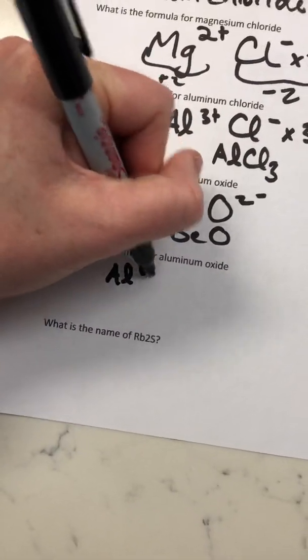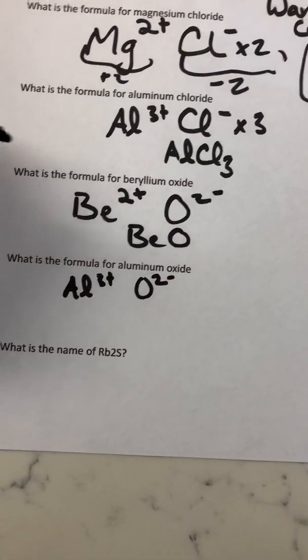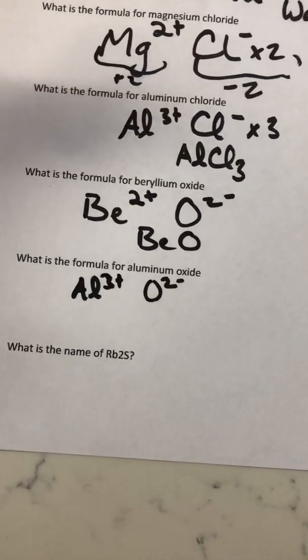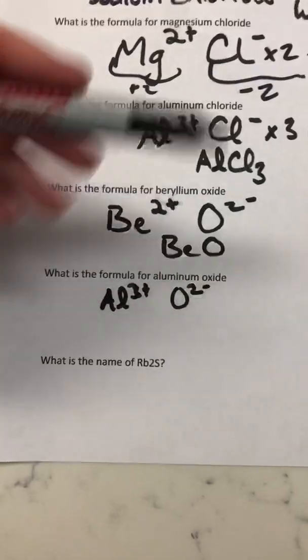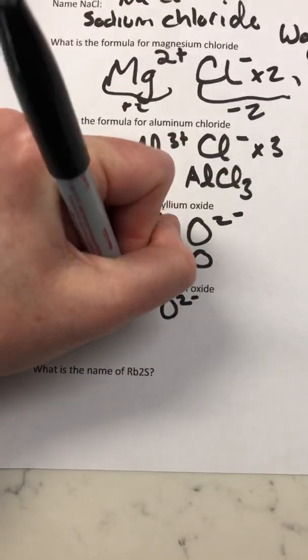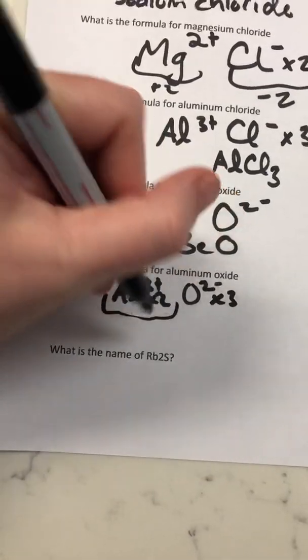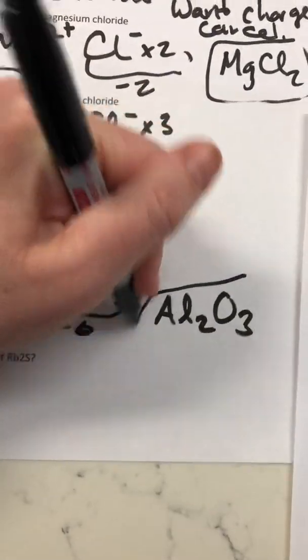For aluminum oxide: aluminum is Al 3-plus and oxygen is O 2-minus. You can't just use one of each — you'd have an unbalanced charge. You also can't do two of one type without the other balancing out. You need to find a common factor between three and two, which is six. Multiply aluminum by two and oxygen by three: you get positive six and negative six. That's why aluminum oxide is Al2O3.